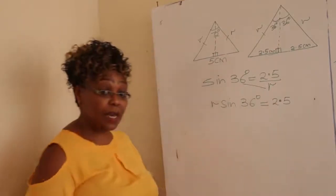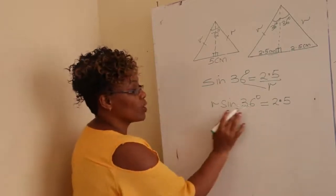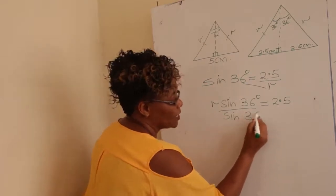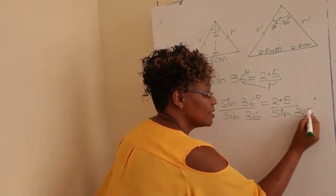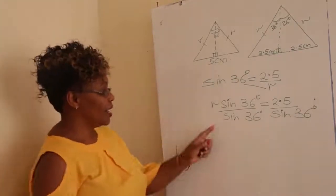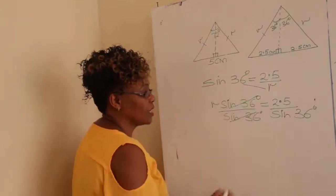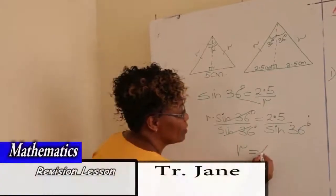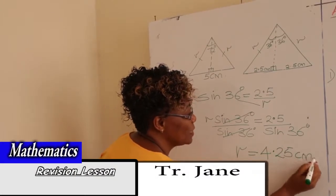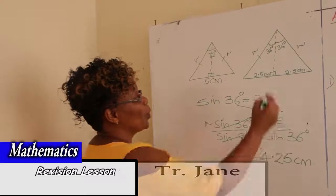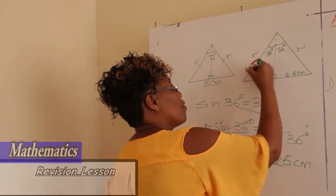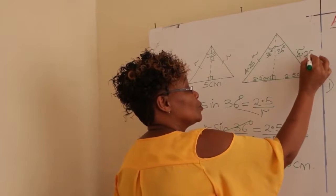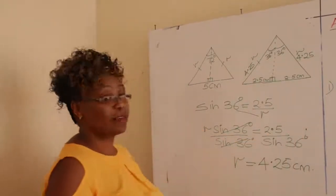To get R, divide both sides by sin 36 degrees. This cancels out, and using a calculator, your R equals 4.25 centimeters. So our radius here is 4.25 centimeters, and the other radius is also 4.25 centimeters.